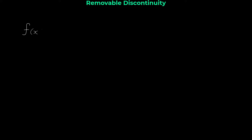Hello and welcome. In this video I'm going to show you some examples about continuity of a function, with a focus especially on removable discontinuities. We are given the function f(x) = (x² - 3x) / (x - 3), and we are asked to show that this function has a removable discontinuity at x = 3.